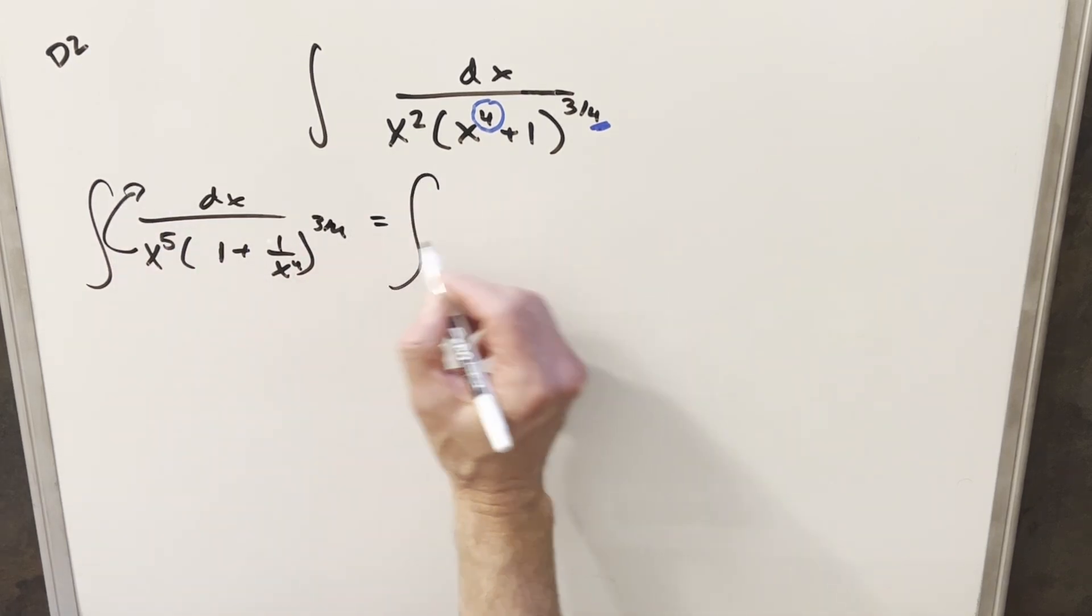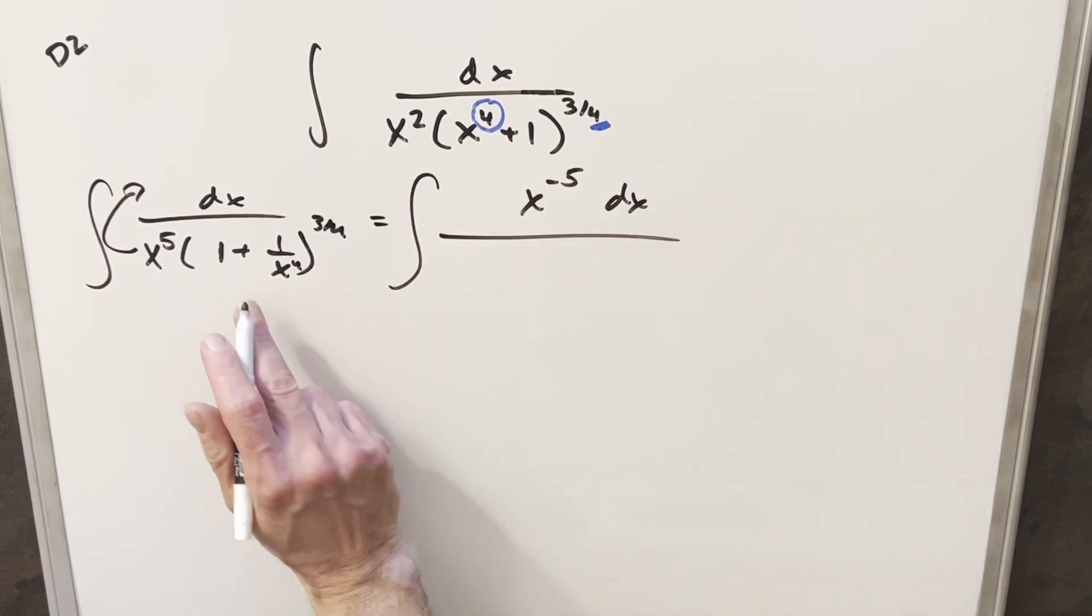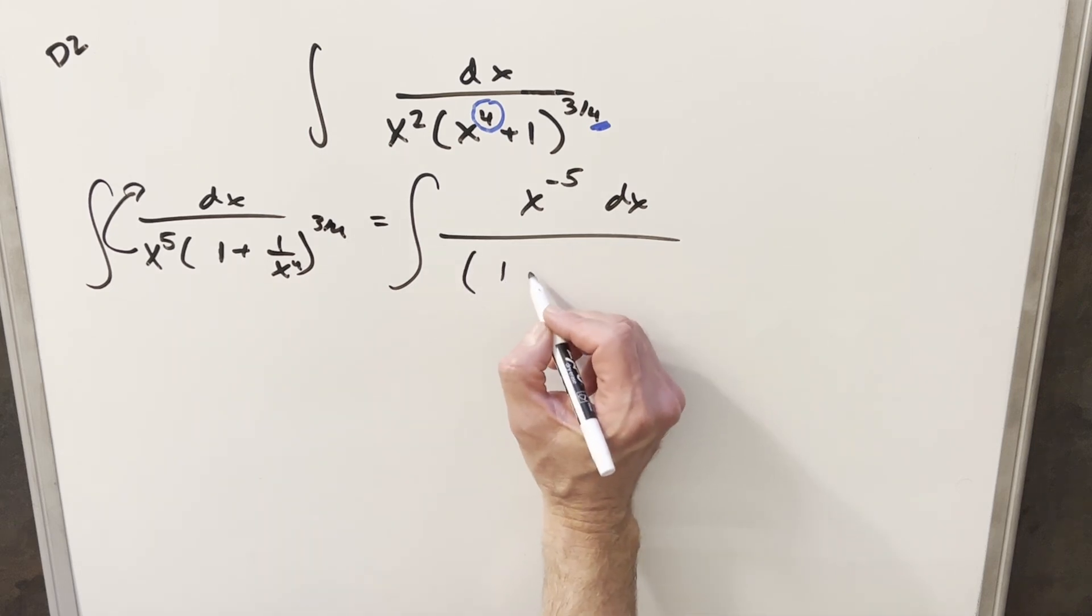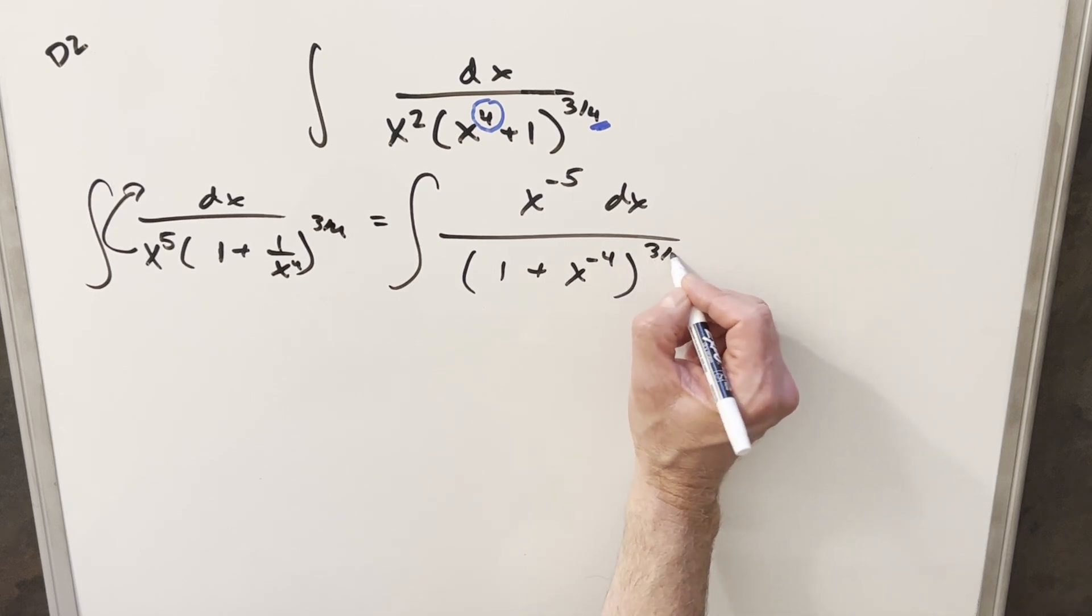I can bring this into the numerator and what we'll do, I'll write that as x to the minus 5th in the numerator dx. Then with this we'll rewrite this, 1 plus, I'll write this as x to the minus 4. And this is all to the 3 4ths.